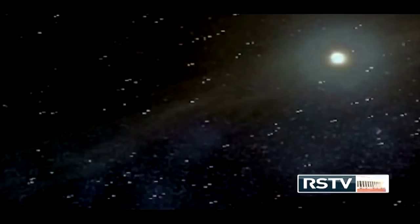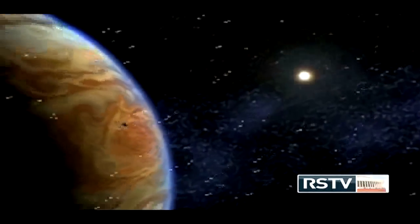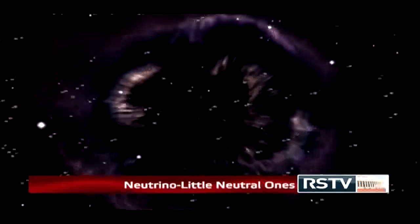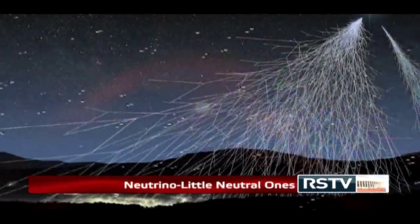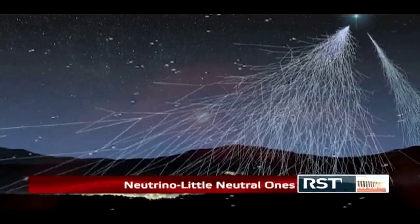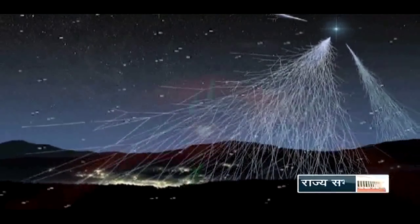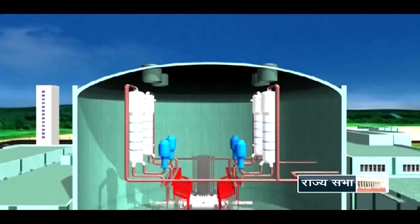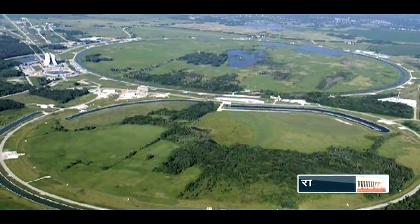Neutrinos are also very important for our life itself, because if there are no neutrinos, the sun will not shine. This is what makes them of great interest to scientists. Neutrinos are abundantly found in nature, as the sun and similar stars and supernovae produce millions of neutrinos every second. They are also produced as a result of cosmic ray interactions in our atmosphere, in radioactive decays, and in other man-made processes like nuclear reactors and particle accelerators.